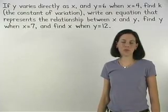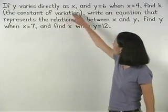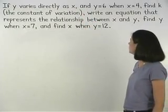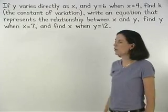Let's start with the first part of the problem. If y varies directly as x and y equals 6 when x equals 4, find k, the constant of variation.